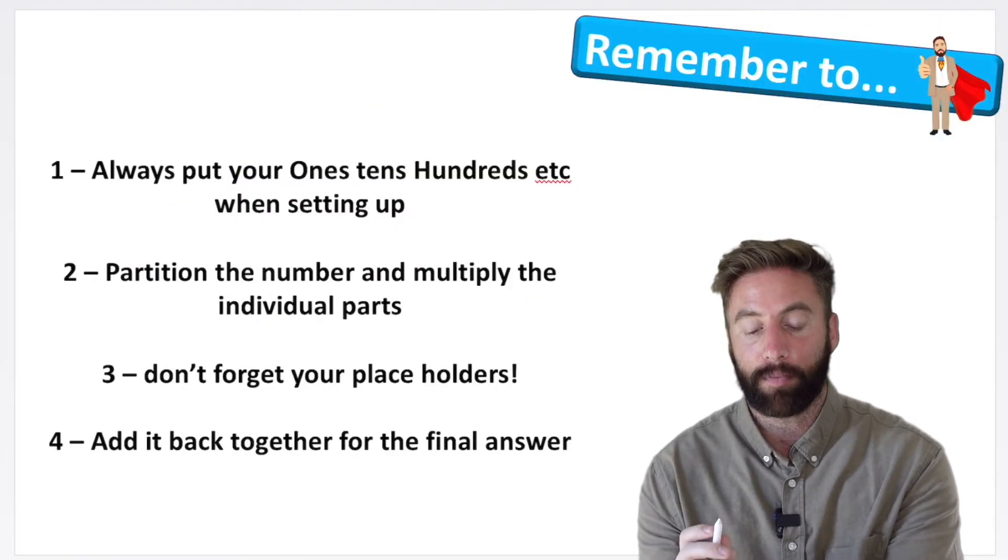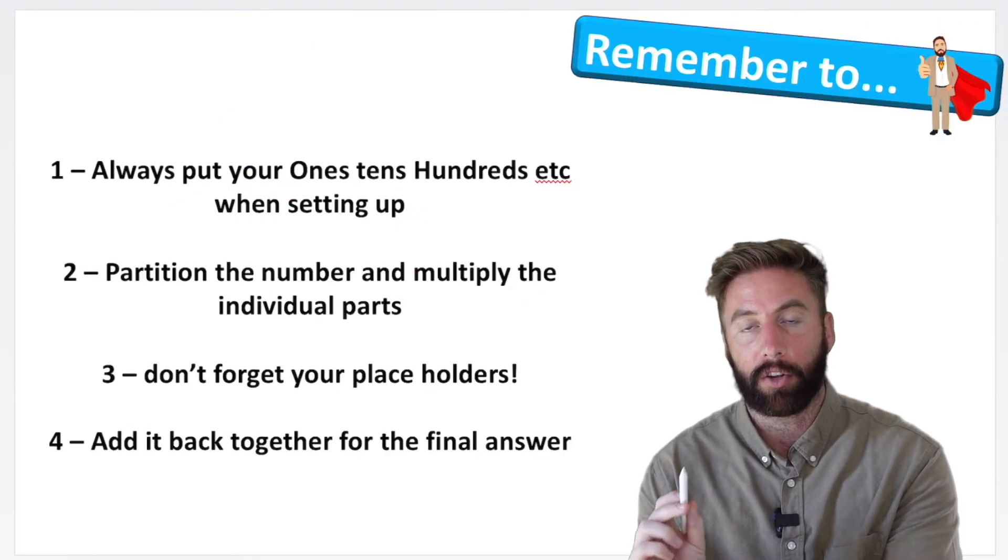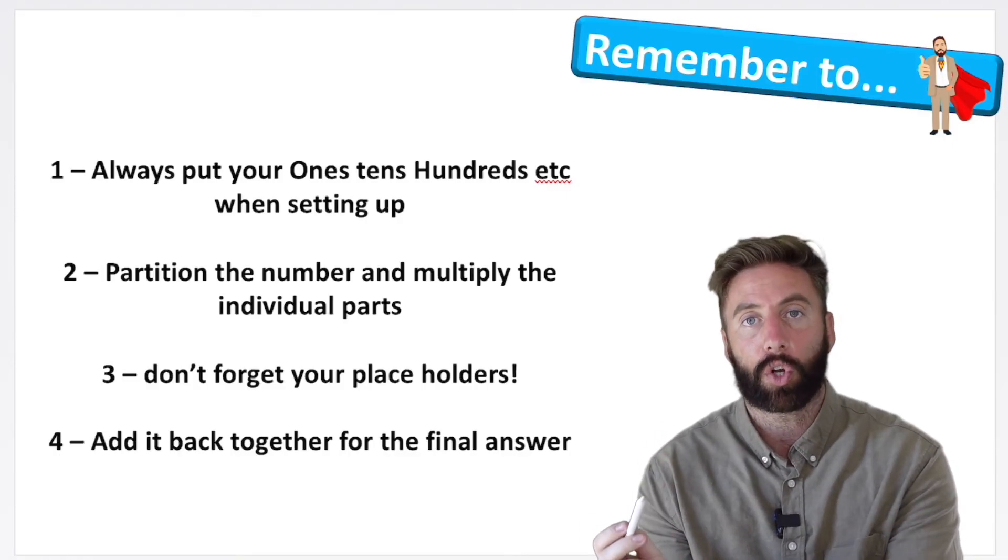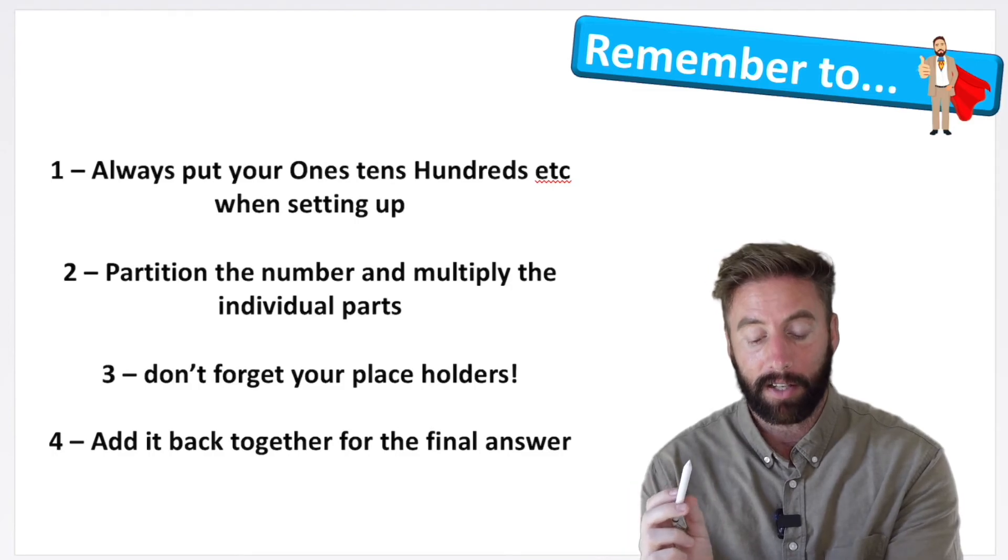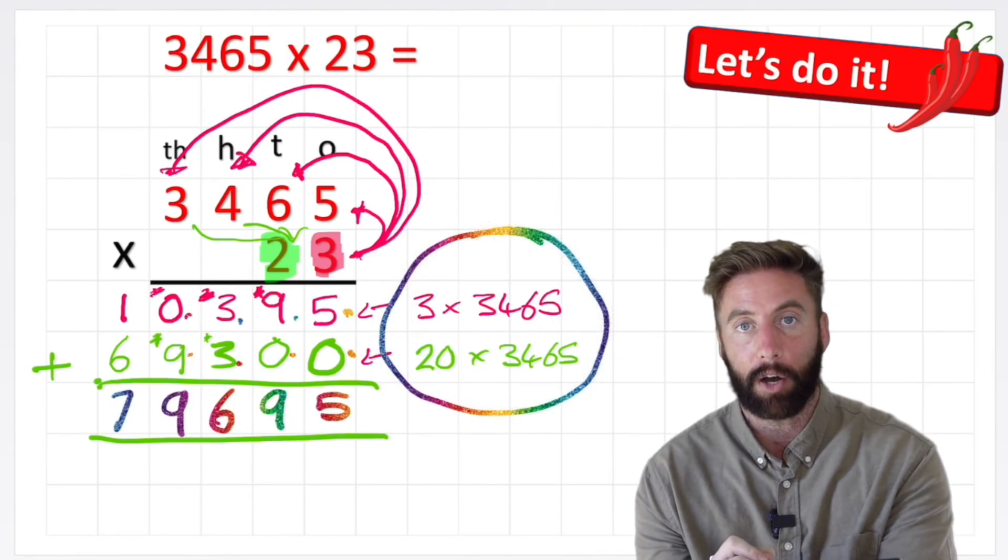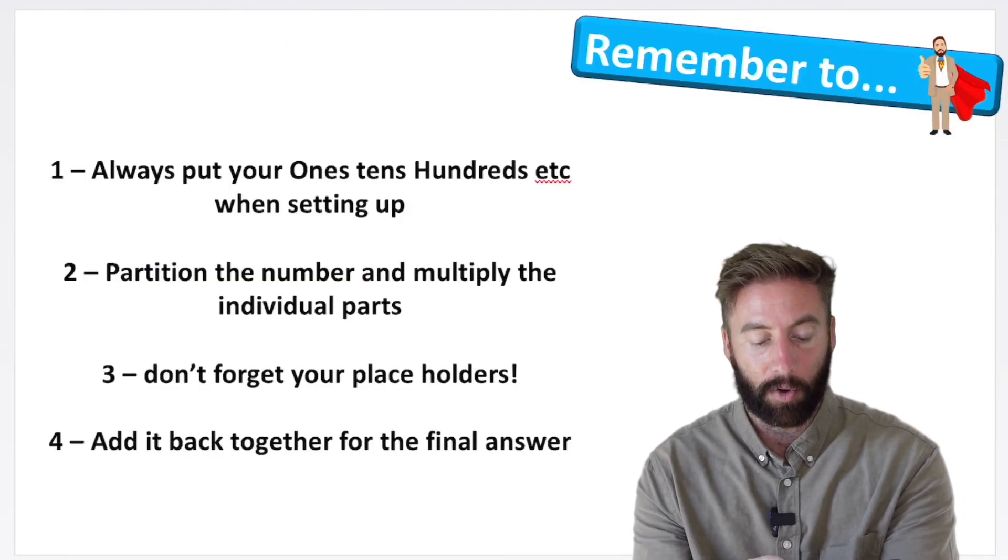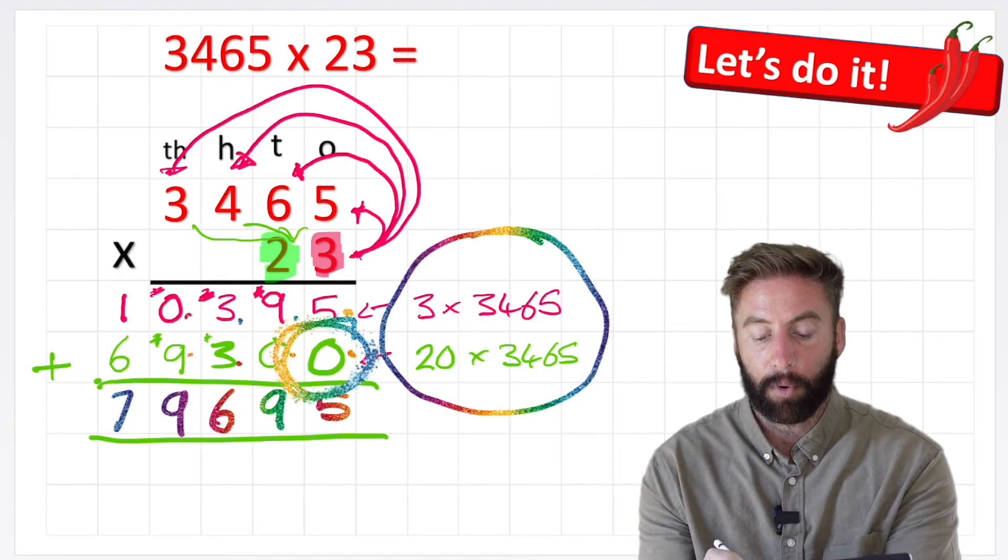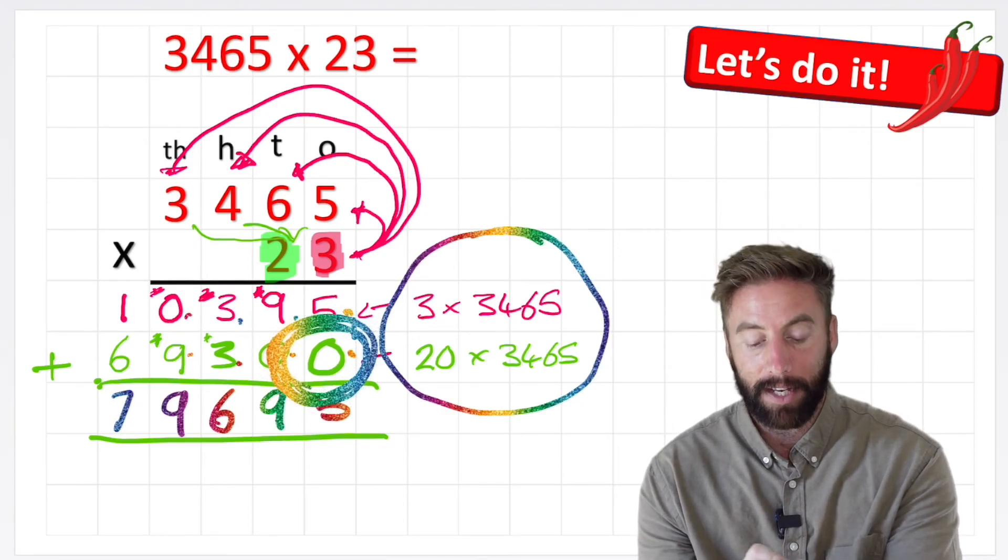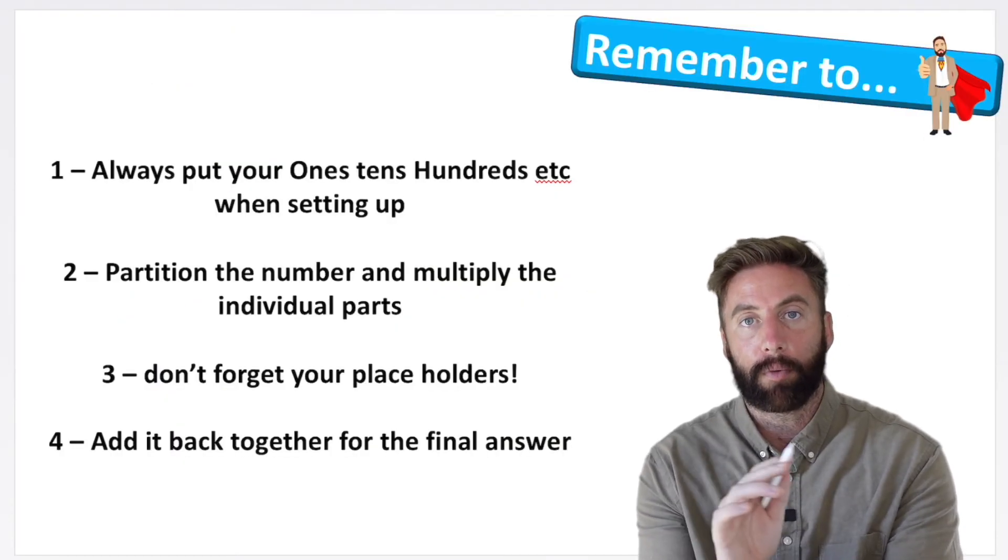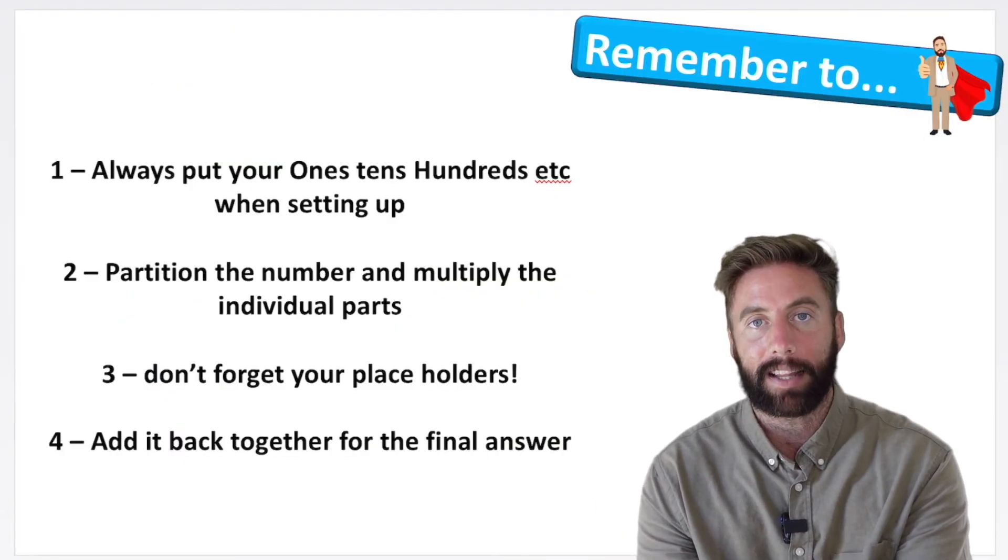Let's just think about things to remember for this. Always put your ones, tens, hundreds, and thousands at the top of your place value chart so that you don't put numbers in the wrong place. Partition the question into the little parts and write out those little questions on the side, that will really help you. Don't forget your placeholder. This little placeholder here is super important. If we forget it, it means we're going to have a very different answer. And finally, once we've done the partition sections, add it all back together to get our final answer and get our tick.